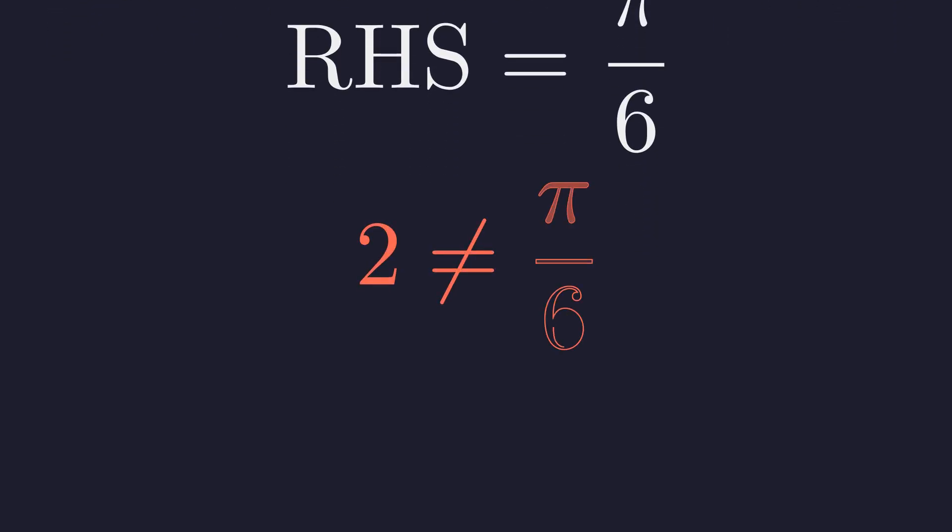And here is the trap. 2 is not equal to pi over 6. The left side does not equal the right side. This means the point (1, 1) is not on the curve.